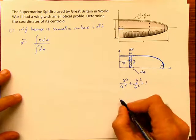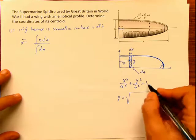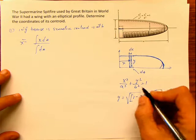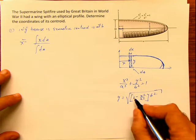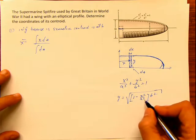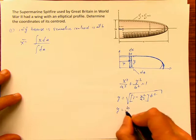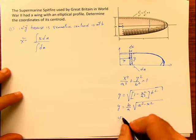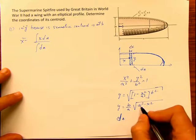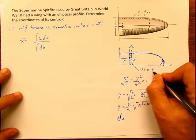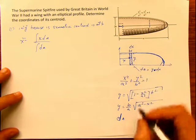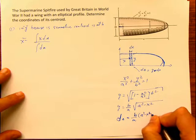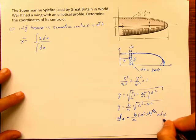I have to solve for y. Then y is going to be the square root of 1 minus x² divided by a², multiplied by b². Taking b² and a² out of the square root gives y equals b over a times the square root of a² minus x². So my differential of area dA is b divided by a times (a² minus x²)^(1/2) times dx.